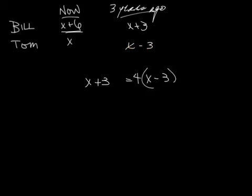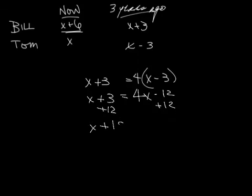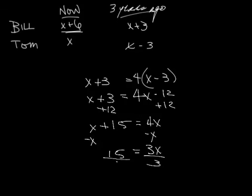So him times 4. That gives me, add 12, so I have x plus 15 equals 4x. I'm going to subtract my x's. I have 15 equals 3x. Divide by 3, x equals 15 over 3 or 5.